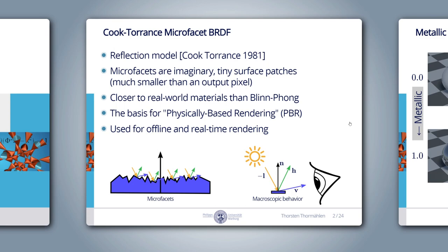Microfacets are imaginary tiny surface patches that are much smaller than an output pixel. This model allows describing the behavior of the macroscopic surface patch mathematically. The microfacet model approximates the real-world physical material properties more closely than the Phong or Blinn-Phong reflection model, which we have discussed in episode number 4. Blinn-Phong shading used to be the standard in real-time rendering because it is fast to compute.